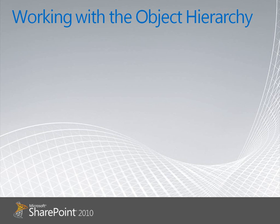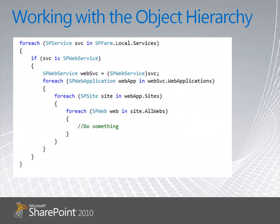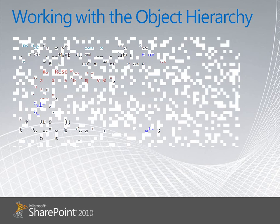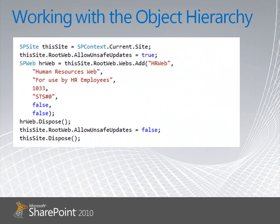Working with the object hierarchy is relatively straightforward. We have a simple snippet of code on the slide that iterates through all of the services in the farm, and then through all of the sites — i.e. SP site objects in the SP web applications for each service — and then through all of the SP web objects, i.e. a SharePoint site in the site collection.